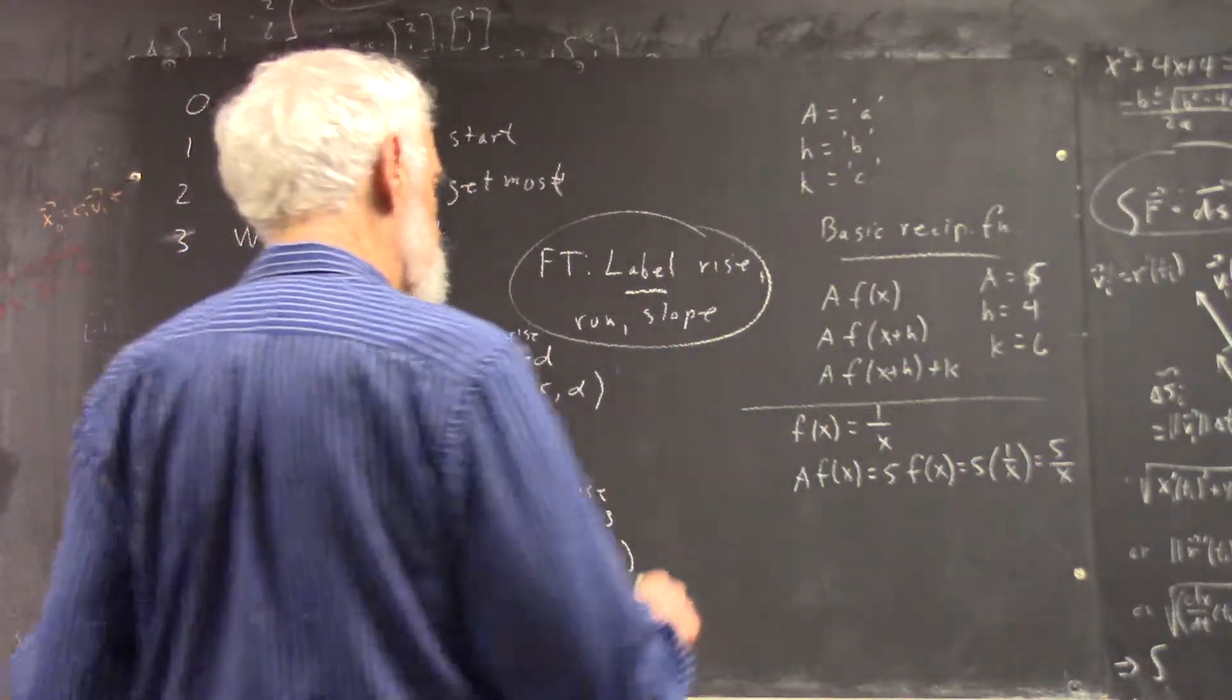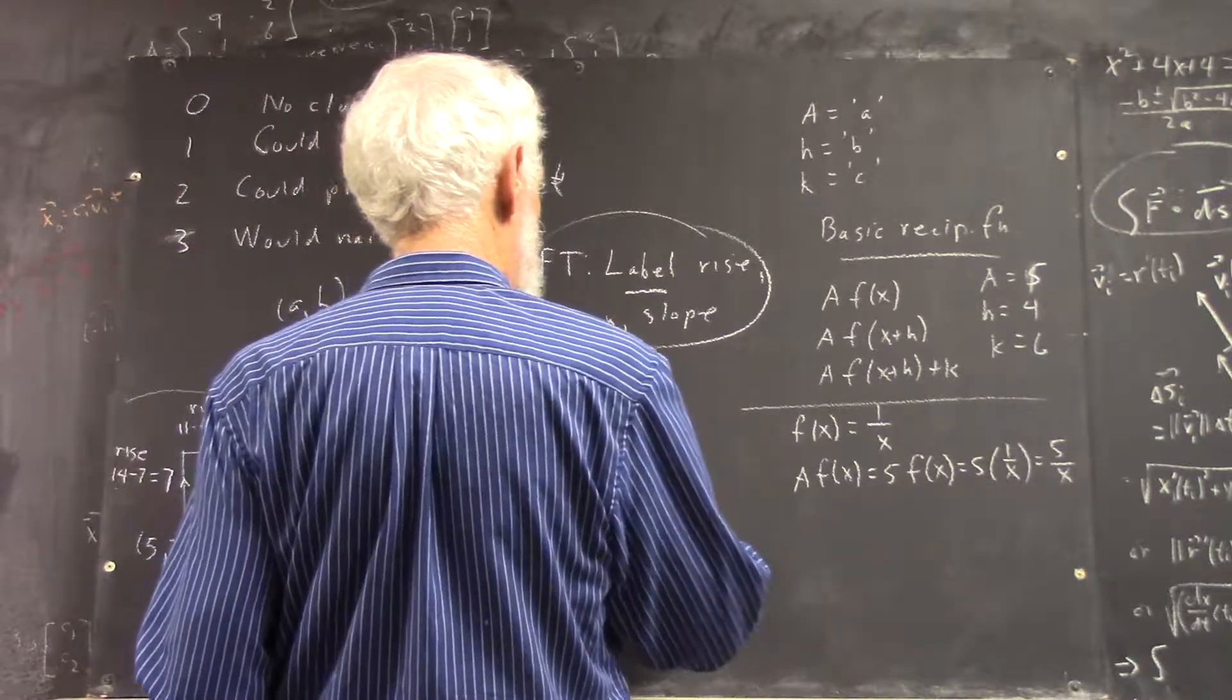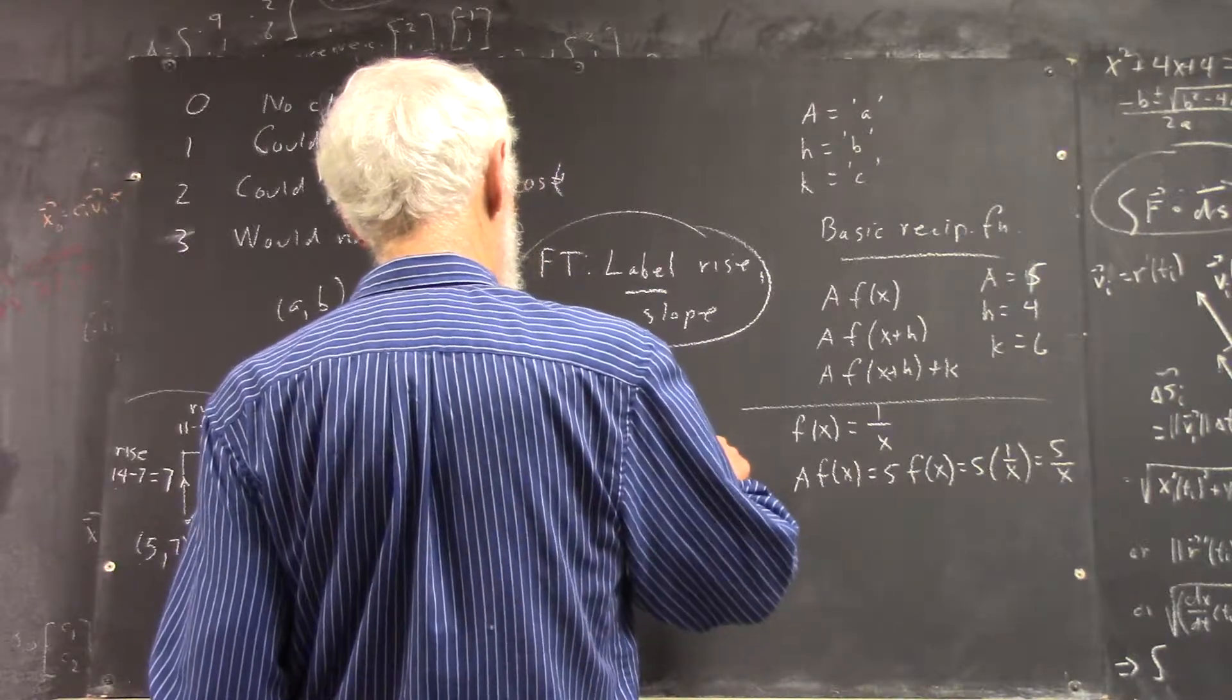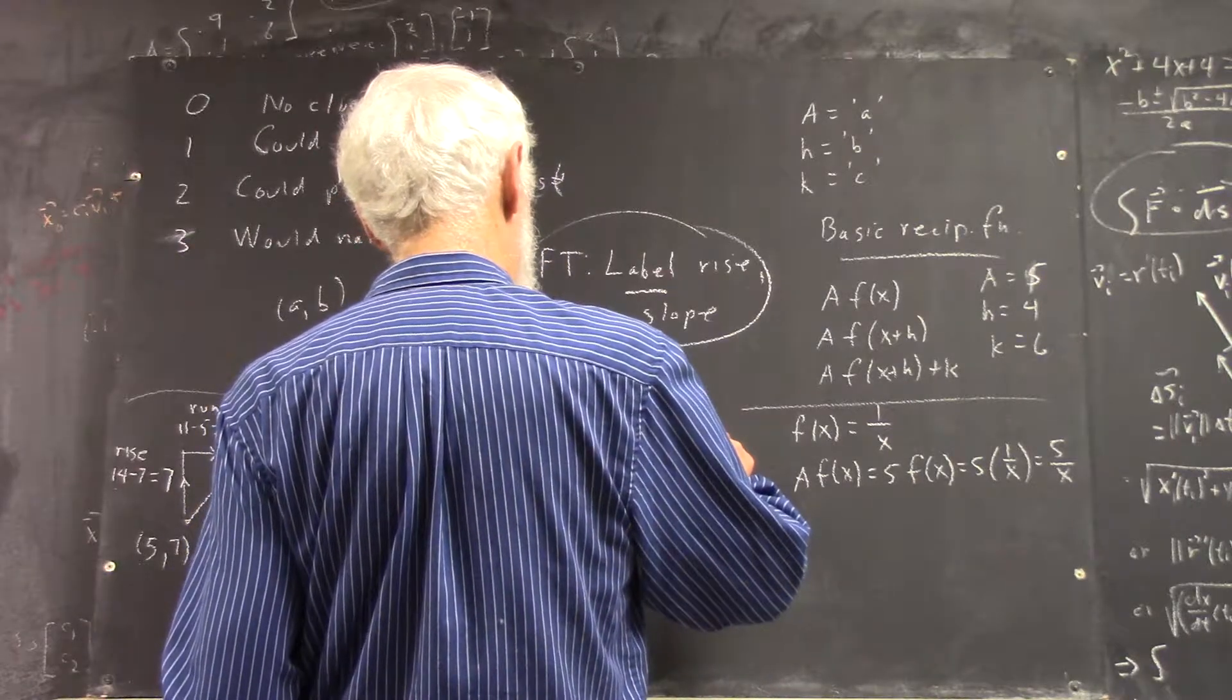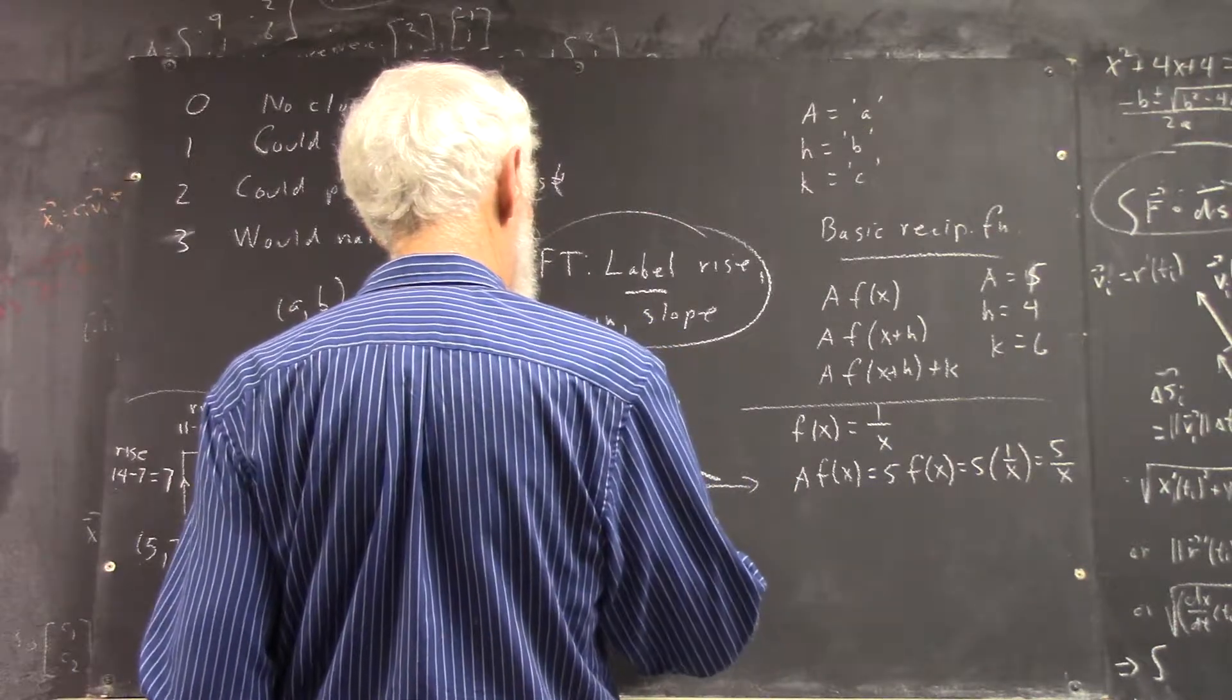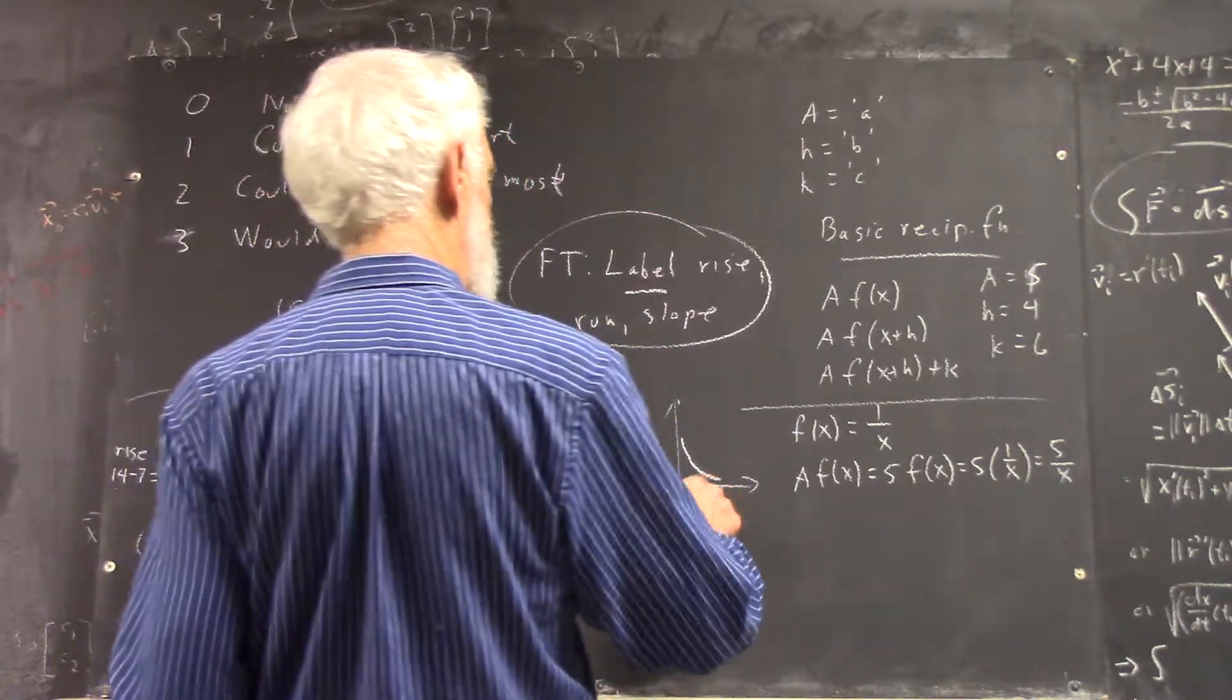Now, we want to also sketch the graph, so I'm not going to go through all the details of shifting and all that stuff, but here's your basic reciprocal function. It has a graph that maybe looks something like this. So here's f of x.